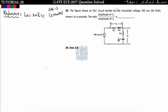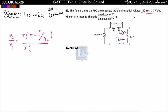The next question: the figure shows an RLC circuit excited by the sinusoidal voltage 100 cos(3t). We have to find the ratio of amplitude of V2 upon amplitude of V1. V2 equals I into impedance. This impedance equals 1 divided by j*omega*C, where omega equals 3 and C equals 1/36, giving 1/(j*12). V1 is I into (4 plus j*omega*L), where omega is 3, giving 4 plus j3.